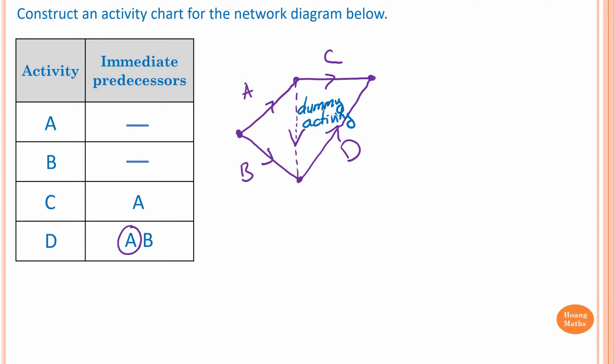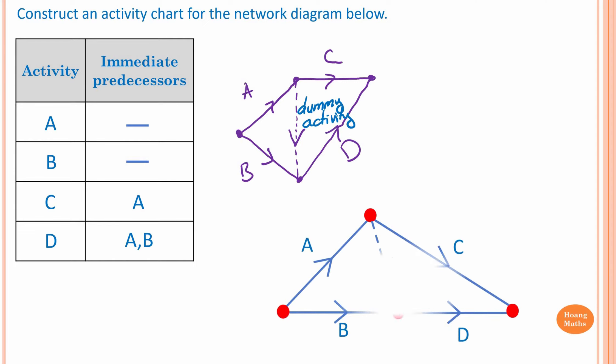So this is the network for this activity chart. You can redraw it to make it look a bit better. Don't forget: the dotted line means Dummy Activity. Please take note — a Dummy Activity always has a weighting of zero. Keep that in mind, because at the moment we don't have any weighting on this network.